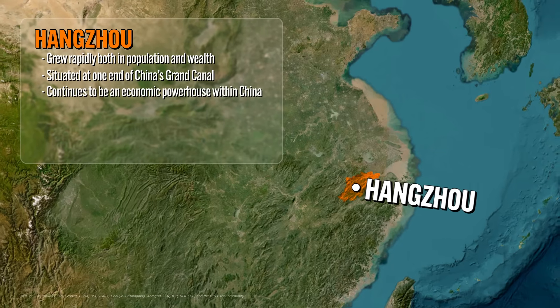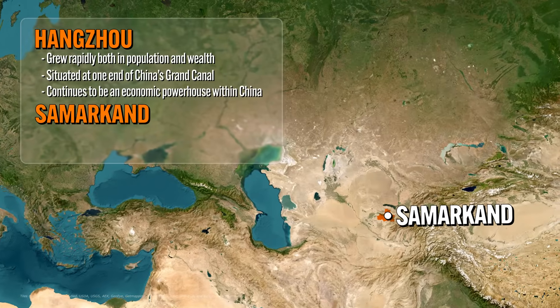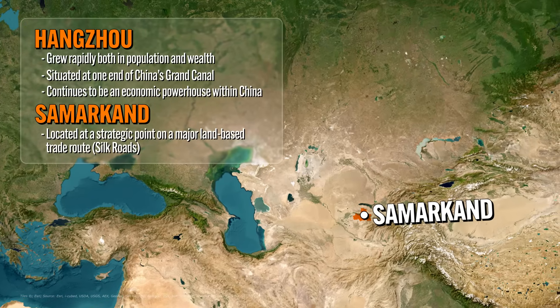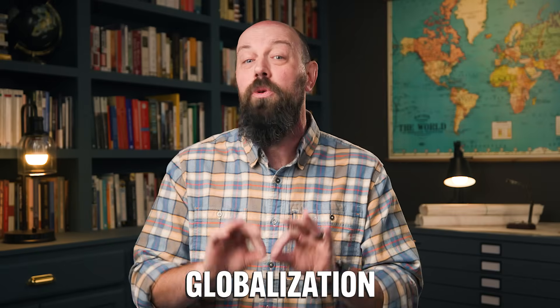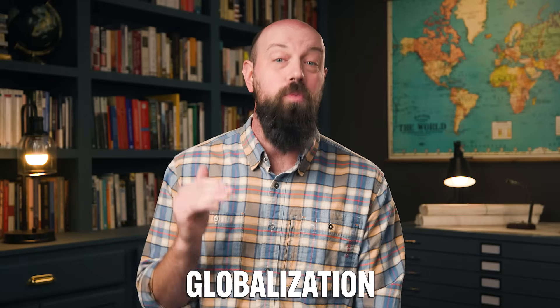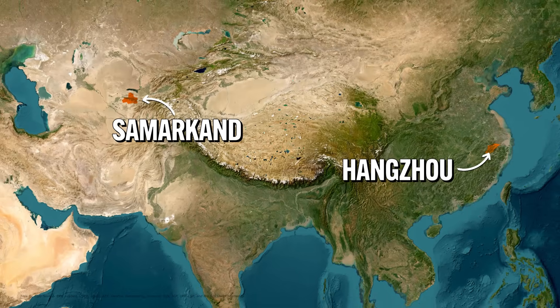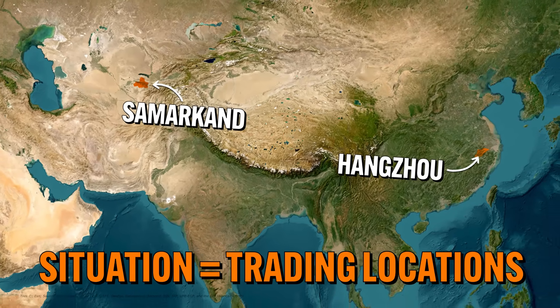Another example of situation influencing urban growth is Samarkand in Uzbekistan. Just like Hangzhou, Samarkand grew powerful and wealthy because it was located at a strategic point on a major land-based trade route — namely the Silk Road. Even today, cities with well-functioning ports grow most rapidly because they can facilitate long-distance trade across oceans. And here's a key tidbit: a city's situation often determines its function. Hangzhou and Samarkand functioned primarily as trading cities because that was their main situational feature.